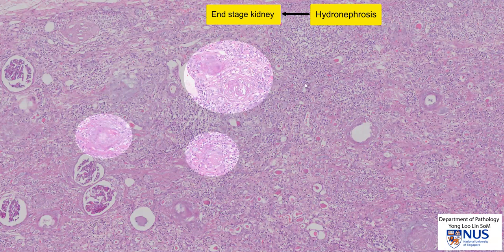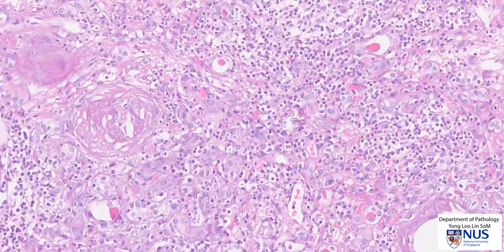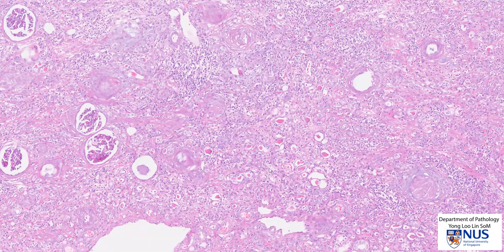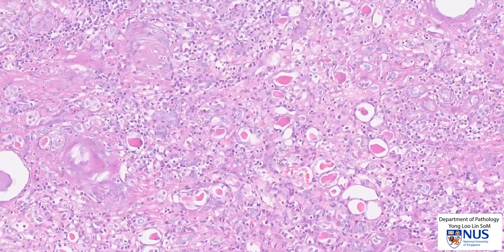We have a lot of interstitial inflammation — many of these are just lymphocytes or chronic inflammatory cells. And also in these areas, you can see that the tubules are quite small and atrophic. And also, if you notice, we have some areas which represent thyroidization as well. So we have similar findings in this end-stage kidney from chronic hydronephrosis.